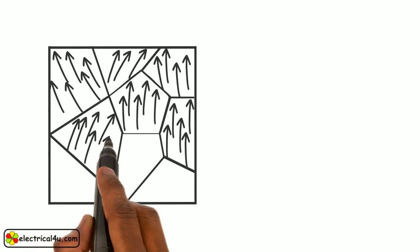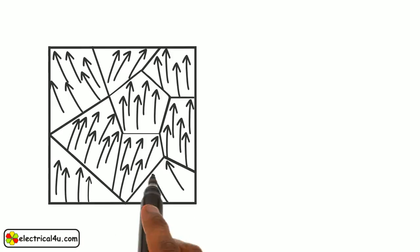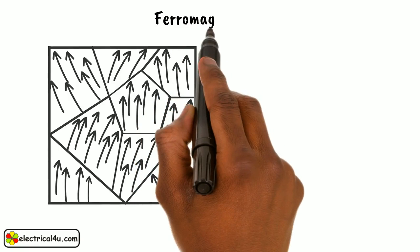the iron piece remains magnetized to some extent. This behavior of iron is called ferromagnetism.